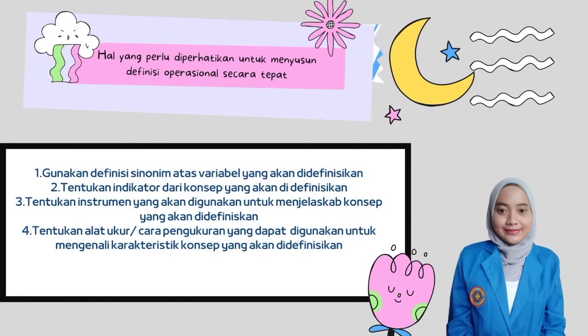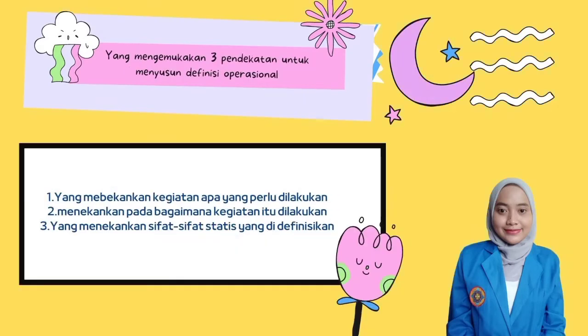Hal yang perlu diperhatikan untuk menyusun definisi operasional secara tepat: yang pertama, gunakan definisi sinonim atas variabel yang akan didefinisikan. Yang kedua, tentukan indikator dari konsep yang akan didefinisikan. Yang ketiga, tentukan instrumen yang akan digunakan untuk menjelaskan konsep yang akan didefinisikan. Yang keempat, tentukan alat ukur atau cara pengukuran yang dapat digunakan untuk mengenali karakteristik konsep yang akan didefinisikan.